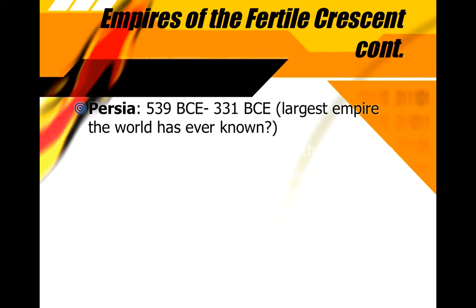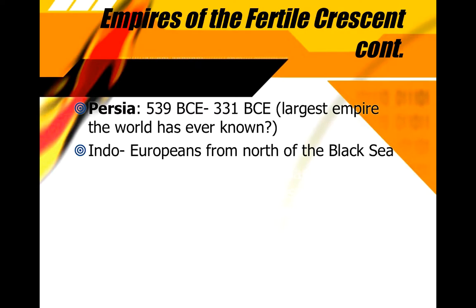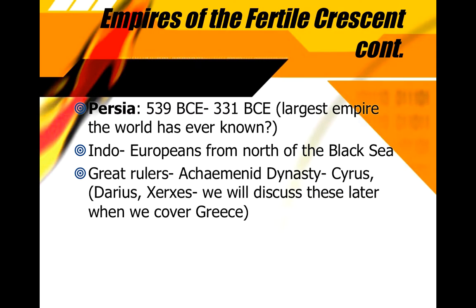The next civilization to look at — and you'll watch a documentary related to this in class — is the Empire of Persia. The Persians potentially built the largest empire the world has known. You could argue the Mongols later were a bit larger, but the Persians certainly controlled an extensive region. The years we're looking at are 539 to 331 BC. The Persians initially came from an area around the Black Sea, spoke an Indo-European language, and the dynasty that emerged as strongest was the Achaemenid dynasty, with three great leaders worth discussing.